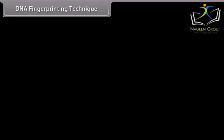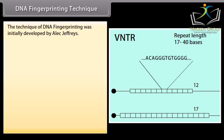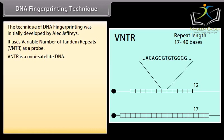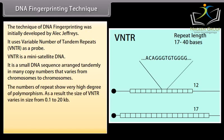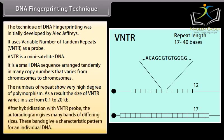The technique of DNA fingerprinting was initially developed by Alec Jeffreys. It uses variable number of tandem repeats (VNTR) as a probe. VNTR is a mini satellite DNA — a small DNA sequence arranged tandemly in many copy numbers that varies from chromosome to chromosome. The number of repeats shows a very high degree of polymorphism, so the size of VNTR varies from 0.1 to 20 KB. After hybridization with VNTR probe, the autoradiogram gives many bands of differing sizes, giving a characteristic pattern for an individual's DNA.